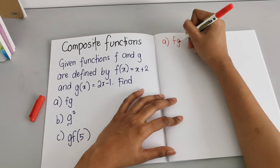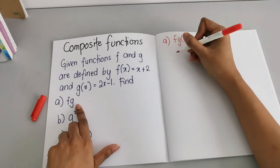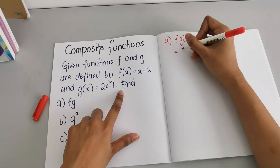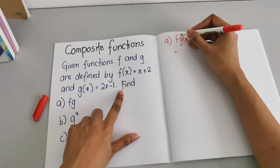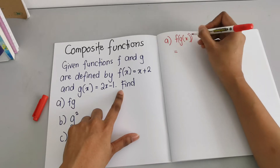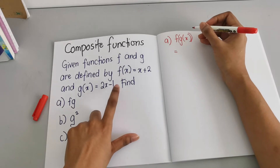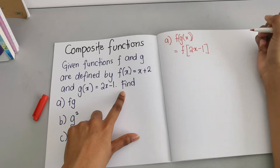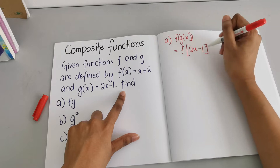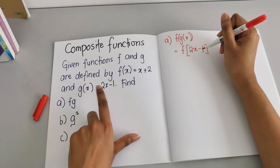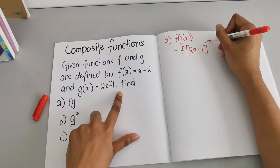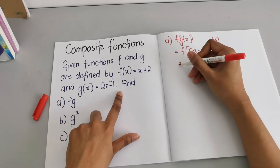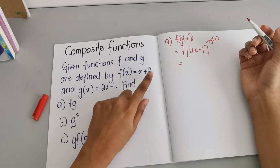For question (a) we need to find f(g(x)). Our g(x) is given as 2x − 1, so what we're going to do is substitute this entire g(x) as 2x − 1. So it's going to be f(2x − 1). This equation has been written down and this is our g(x).